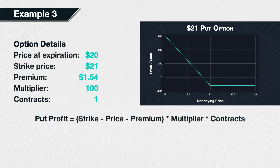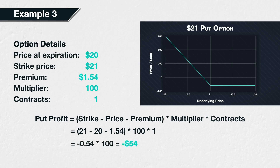Example 3. What if the price at expiration was $20 instead? We would then have a price at expiration of $20, a strike price of $21, a premium paid of $1.54, a contract multiplier of 100, and a number of contracts of 1. Substituting these values into the formula, we get 21 minus 20 minus 1.54, all multiplied by 100 multiplied by 1. This gives us negative 0.54 multiplied by 100, which equals minus $54. That's negative 54 cents per share, meaning this long put option position has made a loss of $54. Notice how the price at expiration of $20 is below the strike price of $21. This means that the put option did have some value at expiration of $1 per share. However, because we paid $1.54 per share for the option, the value at expiration was not enough to make up for the premium paid, leading to a small loss.